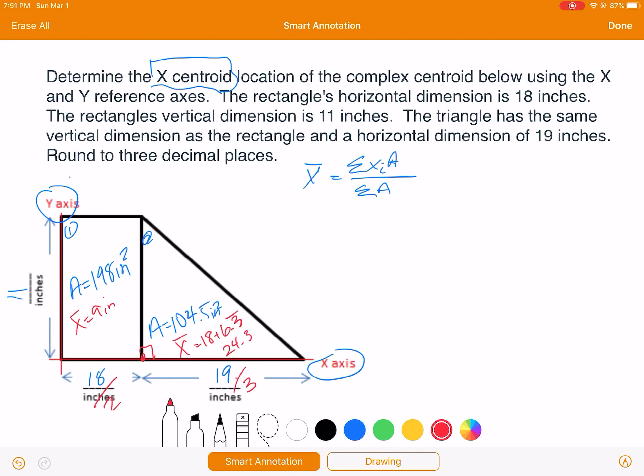So now it says the x times the A's, so the sum of those. So what I'm going to do is I'm going to do 9 times 198 plus 24.3 repeating times 104.5, and then I'm going to divide by 198, the sum of the areas, plus 104.5.